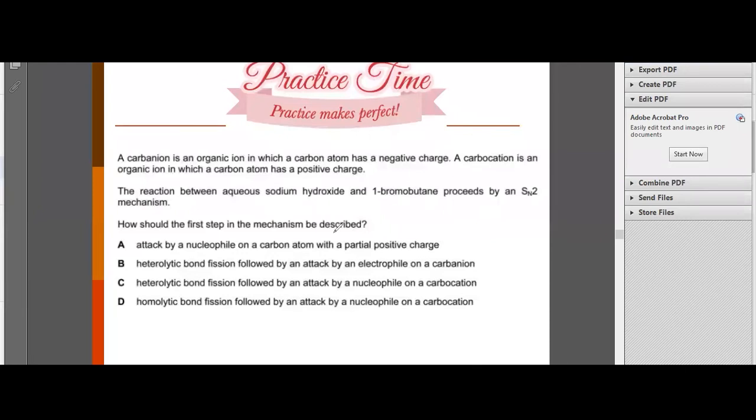Let's try this. The reaction between aqueous sodium hydroxide and 1-bromobutane proceeds by an SN2 mechanism. This is 1-bromobutane. This is primary halogenoalkane, right? Primary halogenoalkane undergoes SN2. How should the first step in this mechanism be described? Attack by a nucleophile on a carbon atom with a partial positive charge. This is correct. A is the answer. This is negative, this is positive. OH- tries to reach this, right?